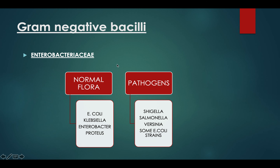Moving to gram negative bacilli — one of the most important families most commonly encountered in questions is Enterobacteriaceae. There are two types: normal flora, which live in the abdomen and intestines — E. coli, Klebsiella, Enterobacter, and Proteus — and pathogens such as Shigella, Salmonella, Yersinia, and some strains of E. coli. But the normal flora aren't innocent; they can cause disease in immunocompromised conditions.